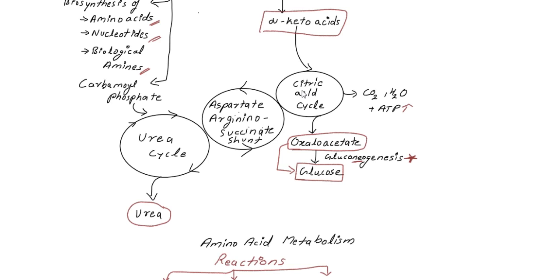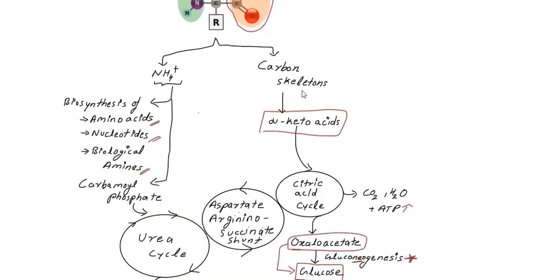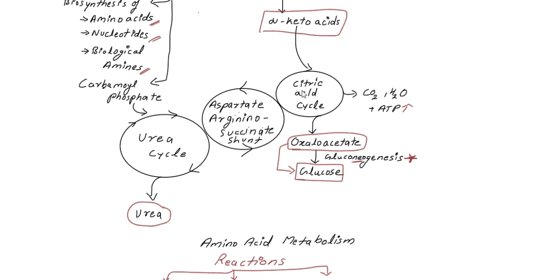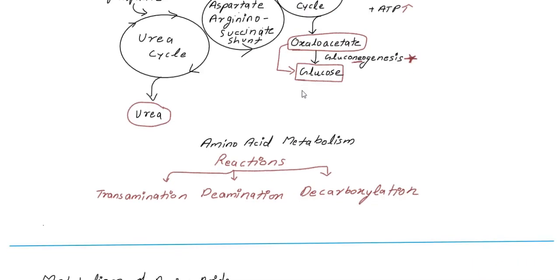What is amino acid metabolism? These are the chemical reactions and chemical changes involving amino acids. There are three types of amino acid metabolism reactions: the first is transamination, the second is deamination, and the third is decarboxylation.